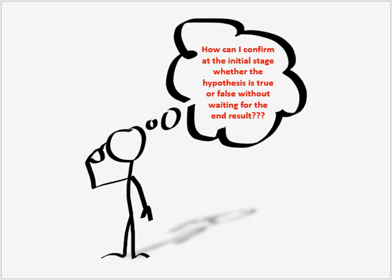But how can someone confirm the result at the initial stage? Because it is very easy to test after the experimentation — if I say some statement, at the end of the experimentation everyone can say whether the statement is true or false, because the outcome is already in hand. But before the experimentation, at the initial stage, how can we check whether the statement is true or false? Determining whether the hypothesis is true or false without waiting for the result is the main purpose of statistical hypothesis.